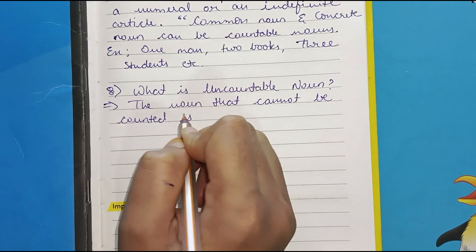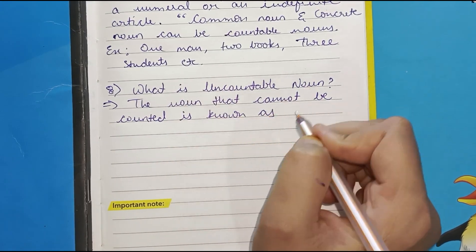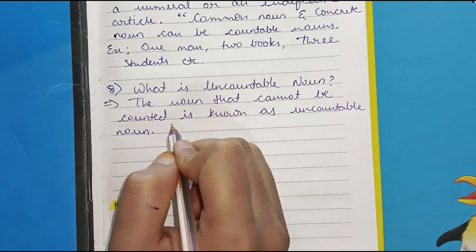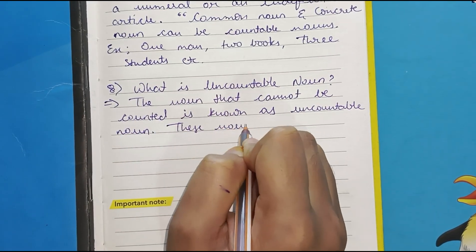Eighth one. What is uncountable noun? The noun that cannot be counted is known as uncountable noun.